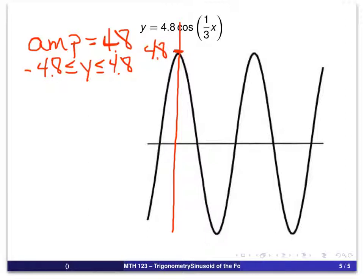So, although we might not completely scale the y-axis, the one thing we do know is that the high point here is at 4.8, and the low point is at minus 4.8.